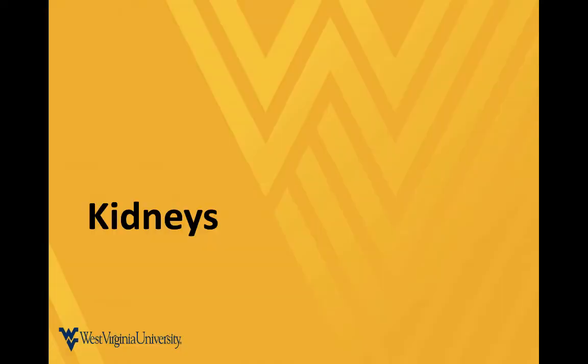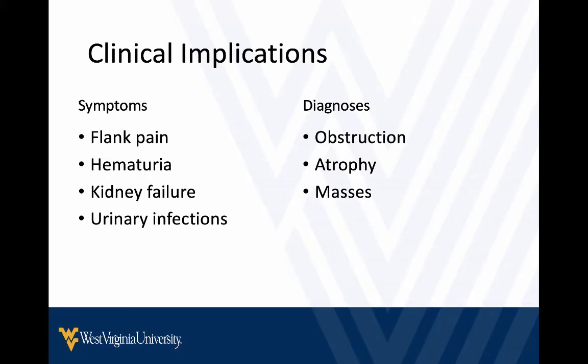Let's spend a couple of quick minutes going over the kidneys. We'll talk a little bit about how to incorporate it clinically and what some of the pathologic findings are going to look like. Symptoms include flank pain, hematuria, acute kidney injury, or complicated urinary infections — all reasons we might want to look at the kidneys and make sure there's not obstruction. The most important finding by far that we're going to look for is signs of obstruction, although we may see atrophy, masses, polycystic disease, or other things as well.